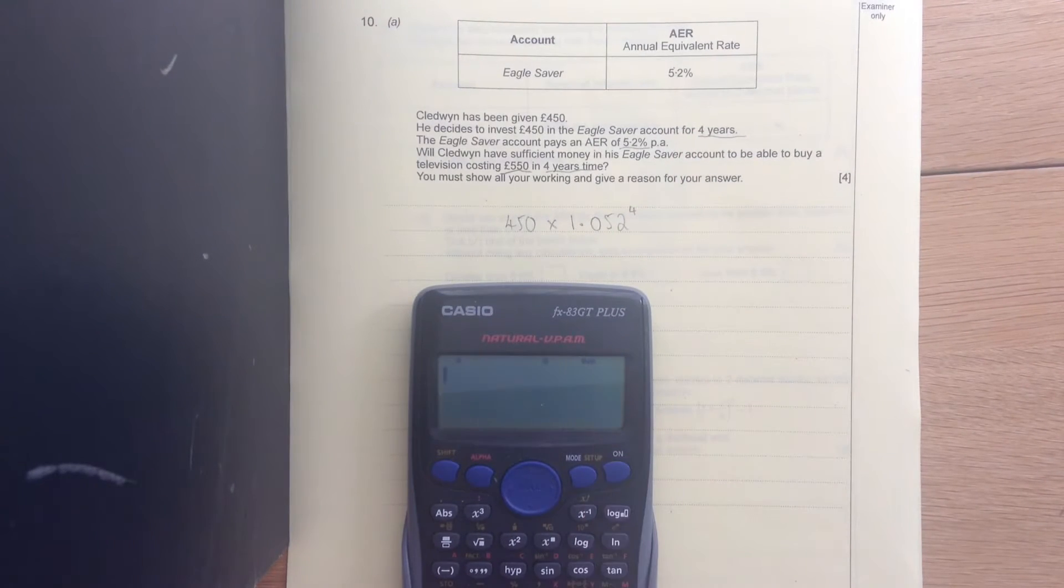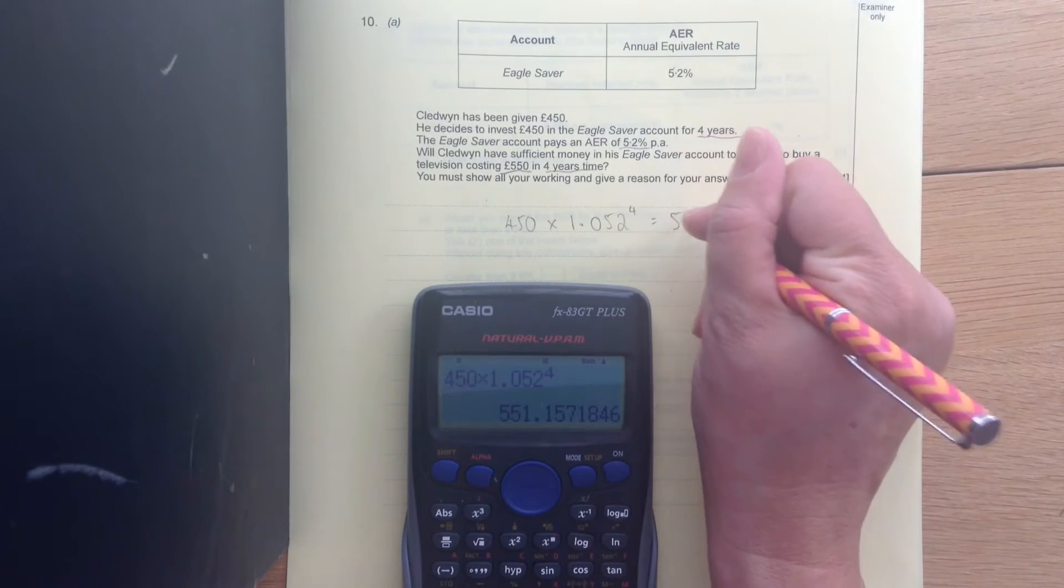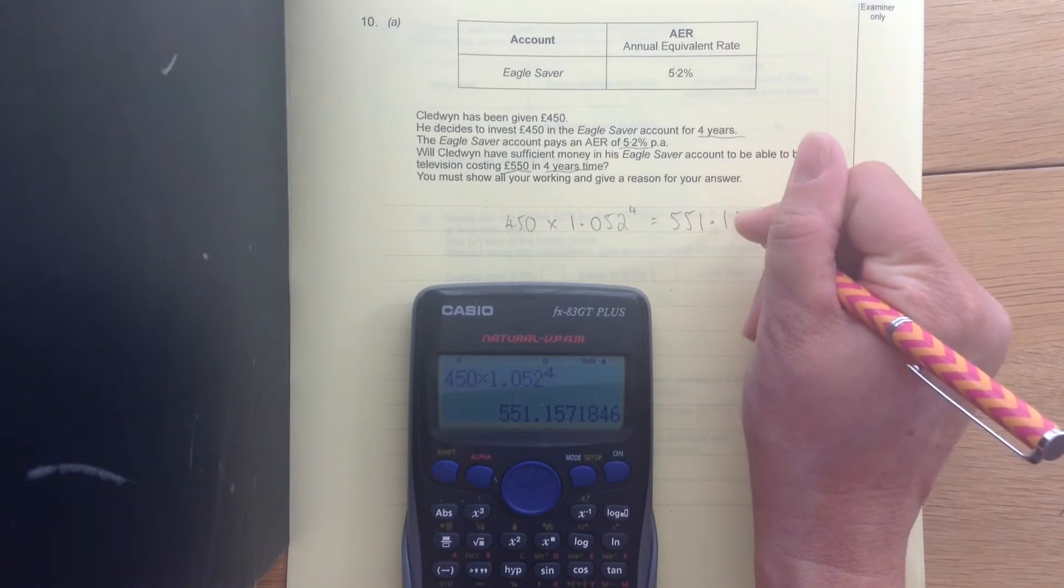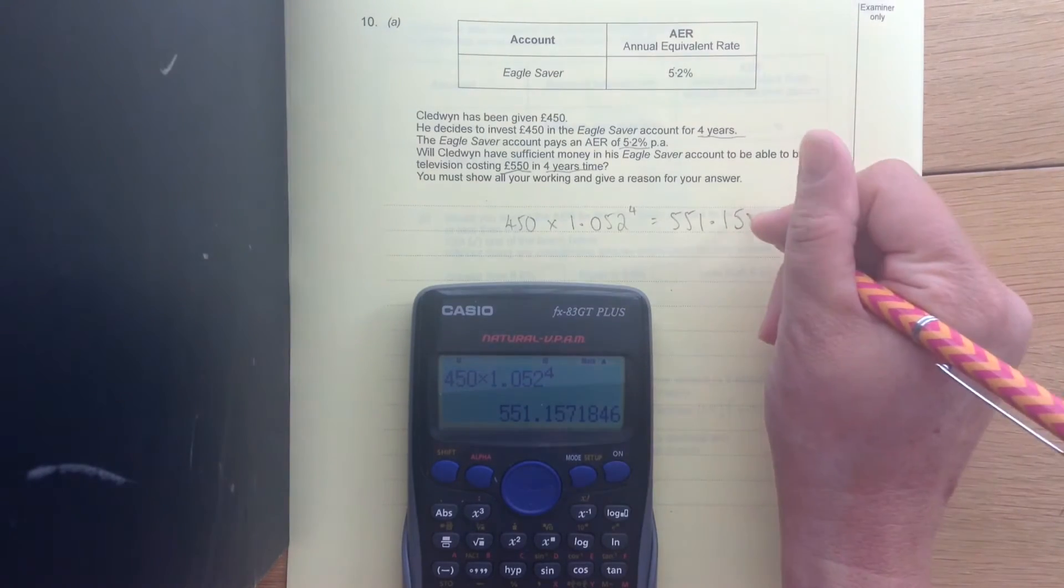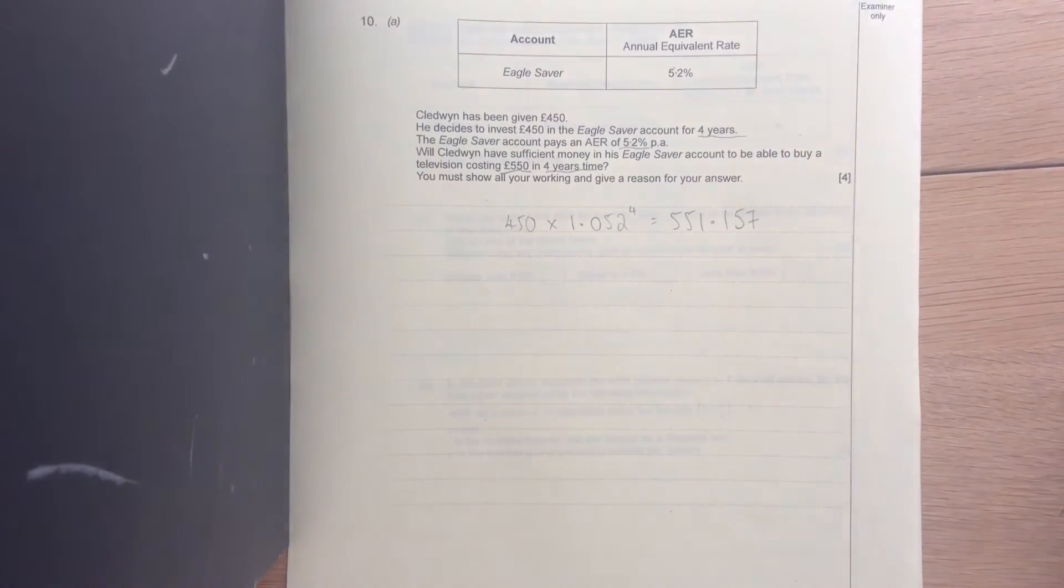So 450 times 1.052 to the power of 4 gives us 551.157. Right, so you will receive, after 4 years,